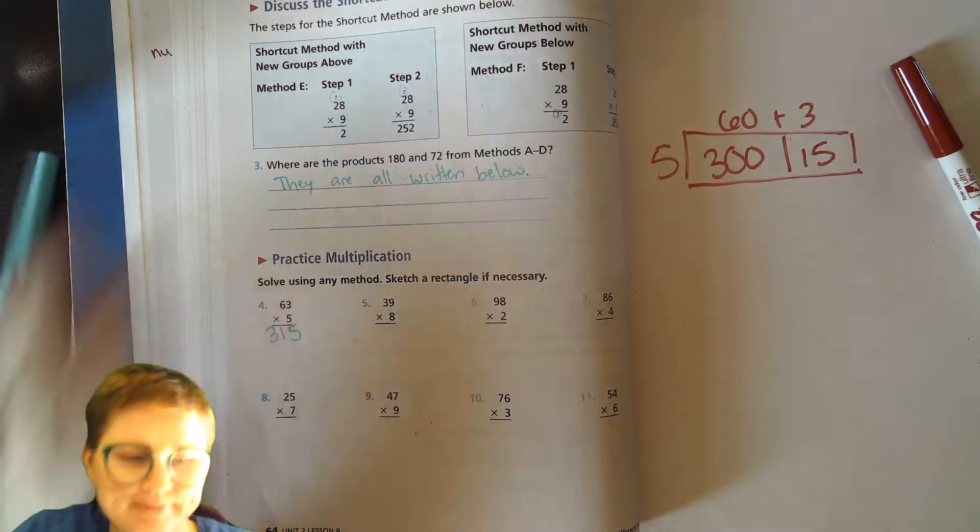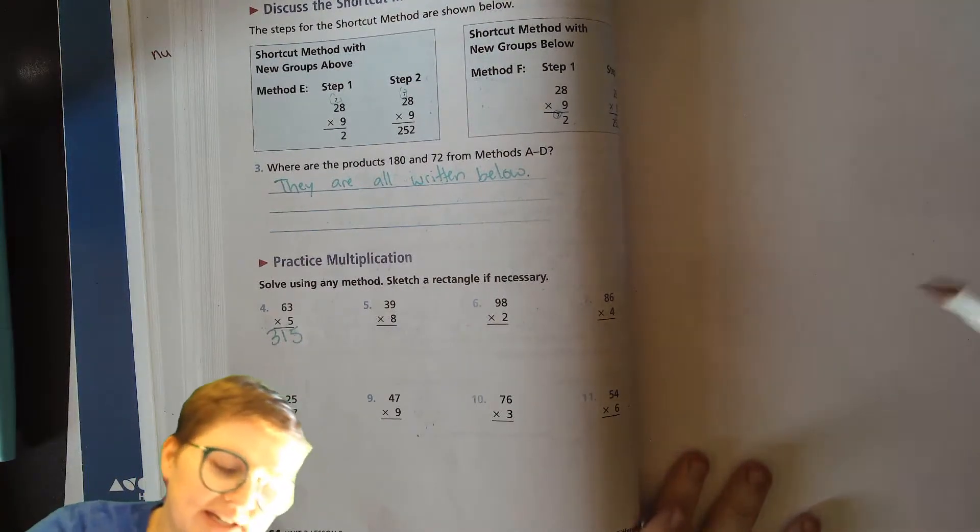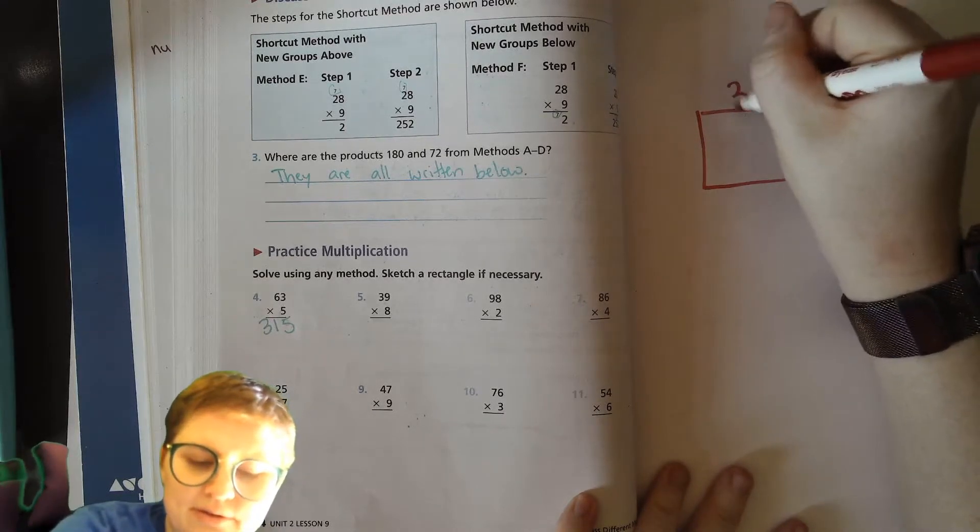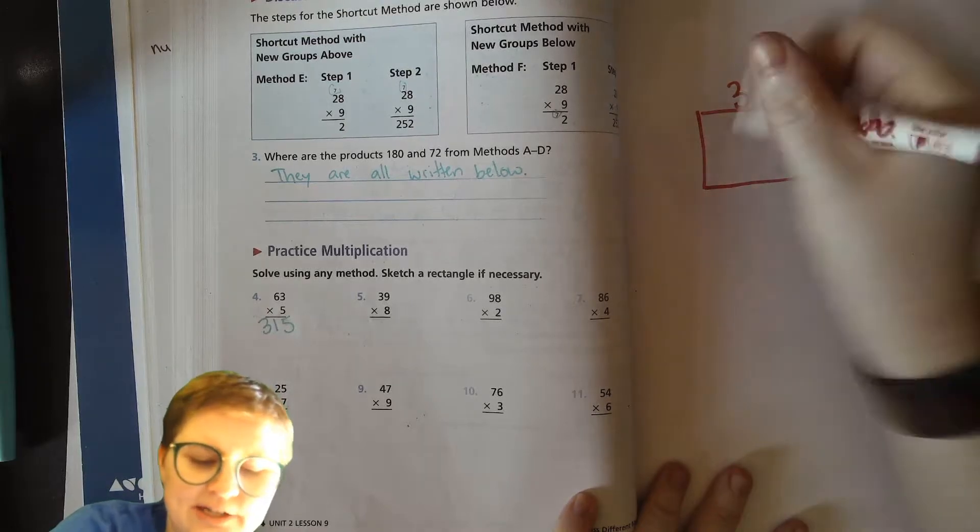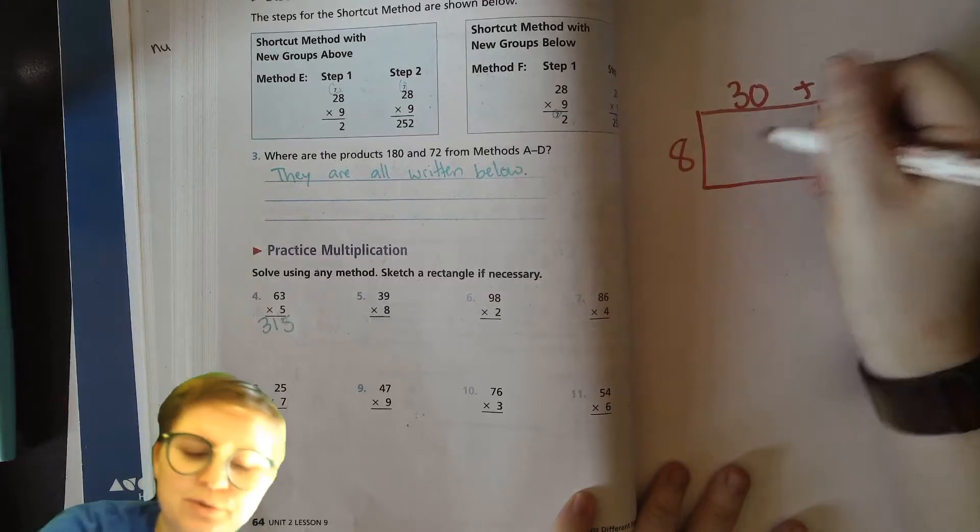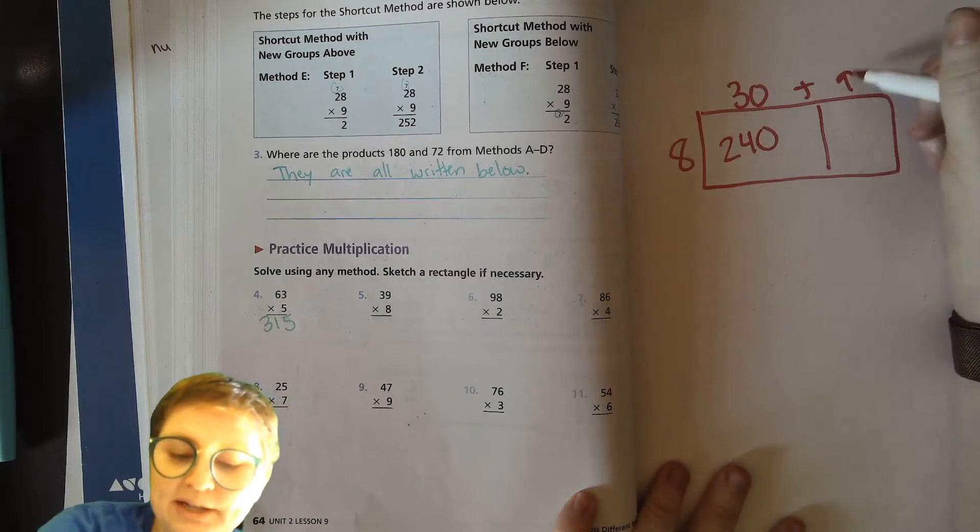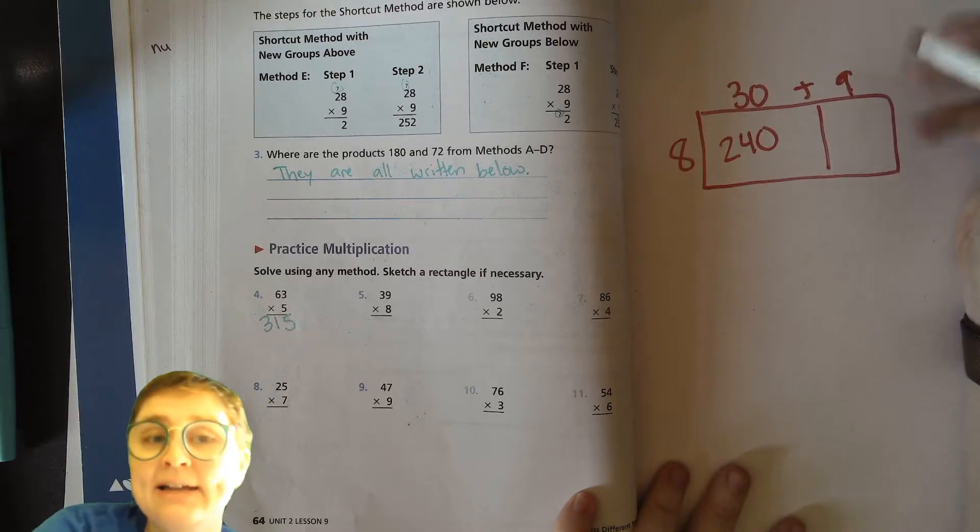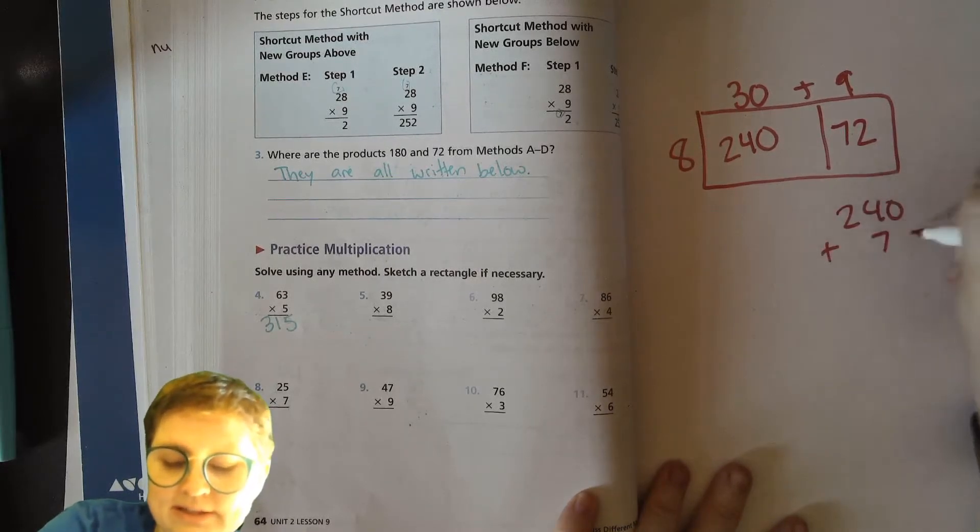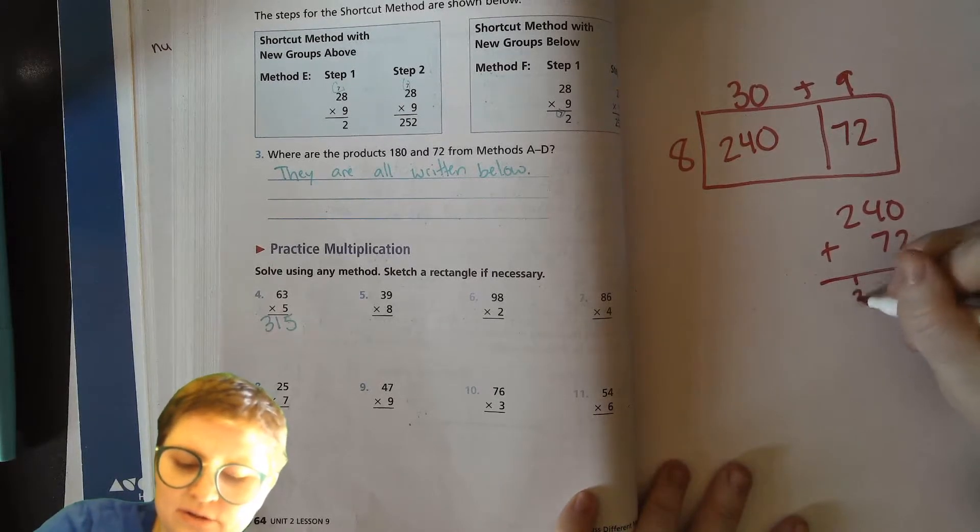Okay, 39 times 8. 30 plus 9 is 39, and 8 goes over here. 3 times 8 is 24, so 3 tens times 8 is 24 tens, 240. And 8 times 9 is 72. Add those up, 240 plus 72, 2, 11, 3, so 312.